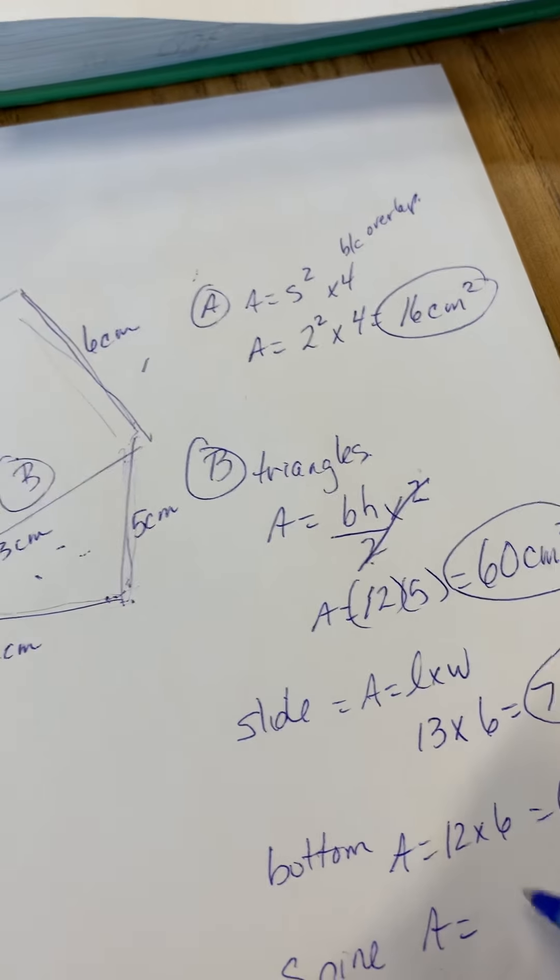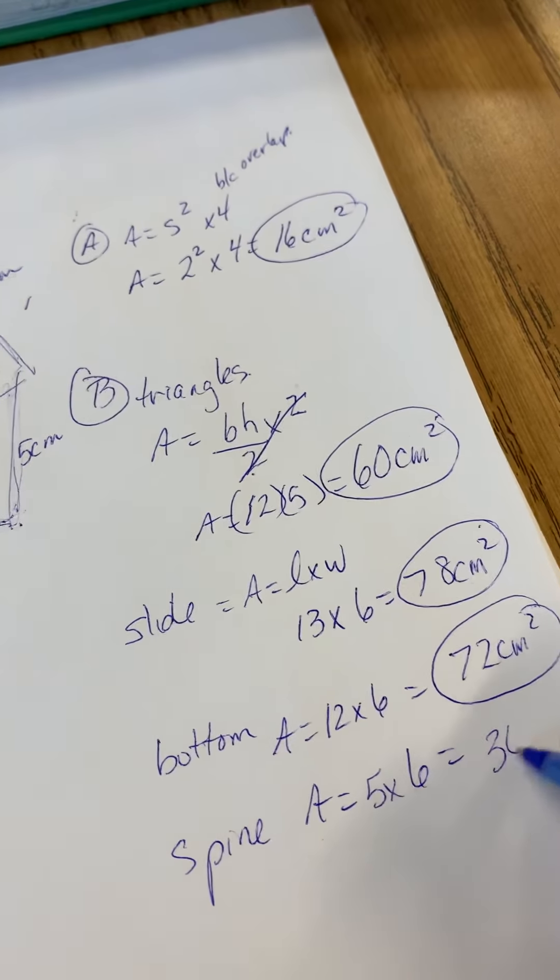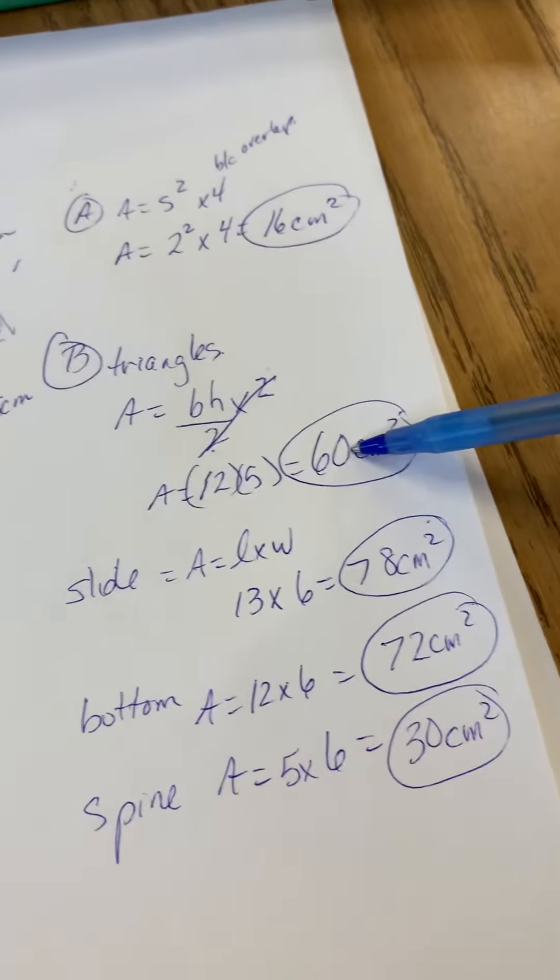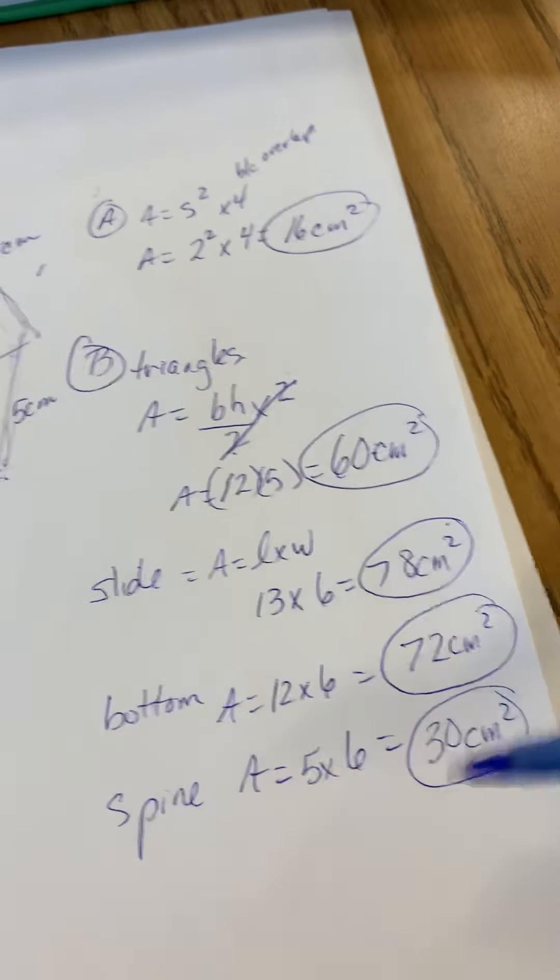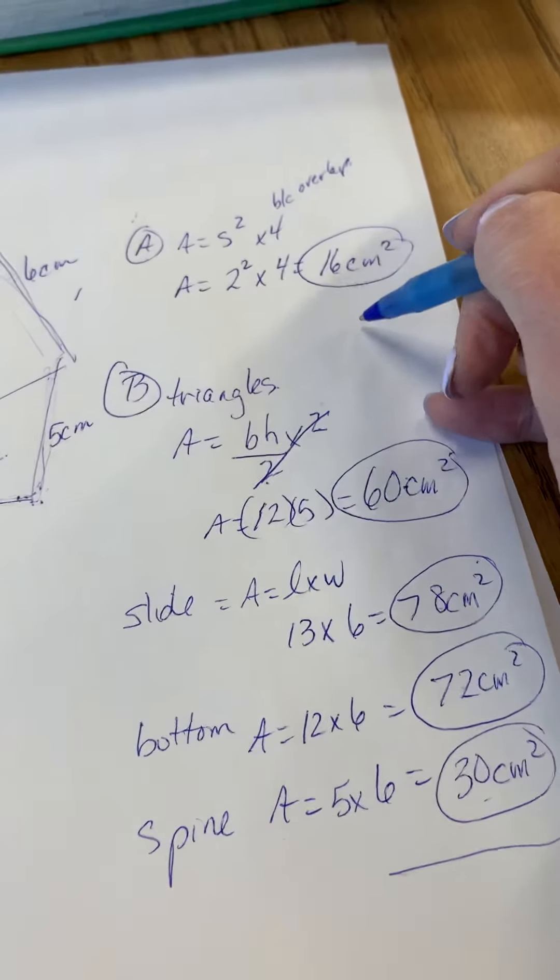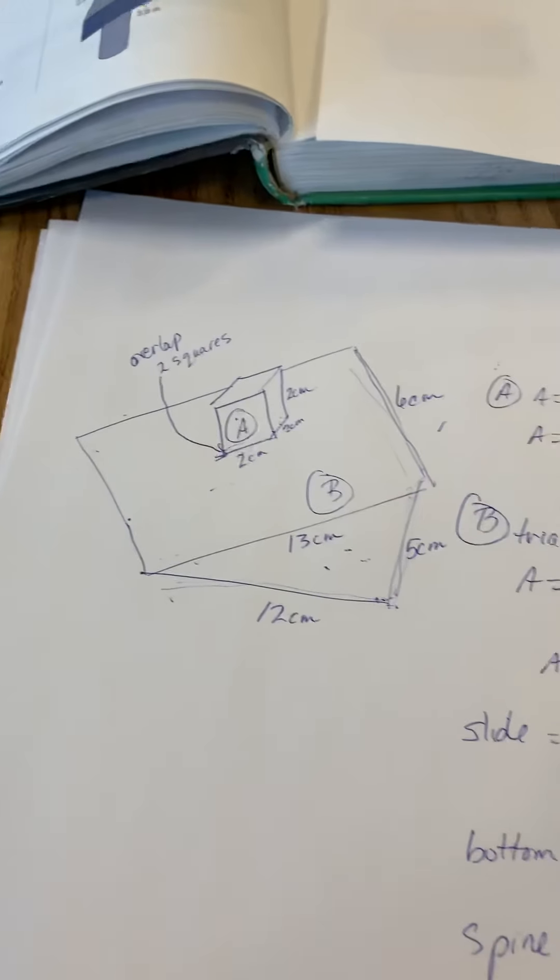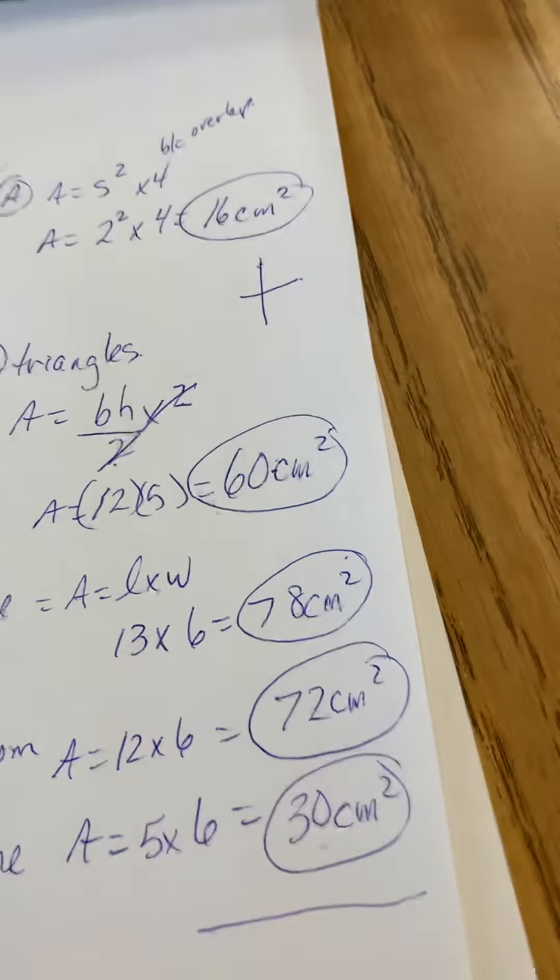And that rectangle is 5 by 6, which is 30 centimeters squared. I just want to double check. I did two triangles, so that's 2, 3, 4, 5. So there's all the pieces of my triangular prism. And don't forget to add in the surface area of that cube because this is a composite object.